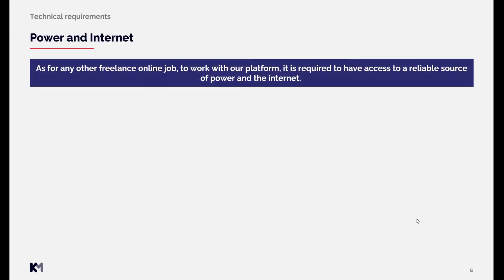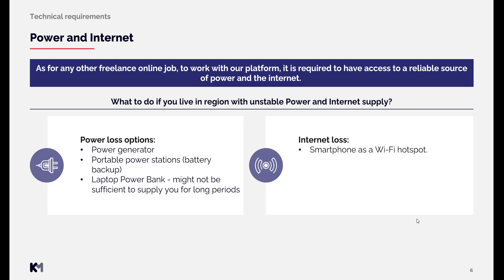For today's last topic, we're going to discuss power and internet. As with any freelance online job, it is required to have access to a reliable source of power and internet. If you live in a region with unstable supply, we provide options such as a power generator, a portable power station, or a laptop power bank — though the power bank might not be sufficient for longer periods. As for internet loss, using your smartphone as a Wi-Fi hotspot can work just fine, as you won't need much data to work on our projects.